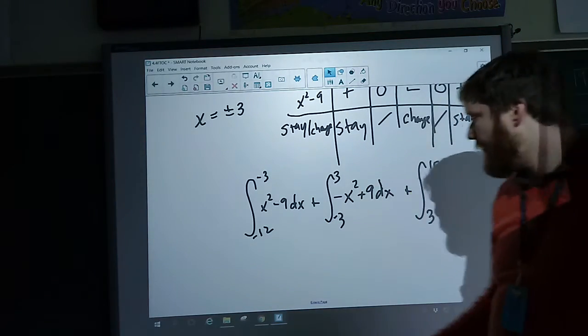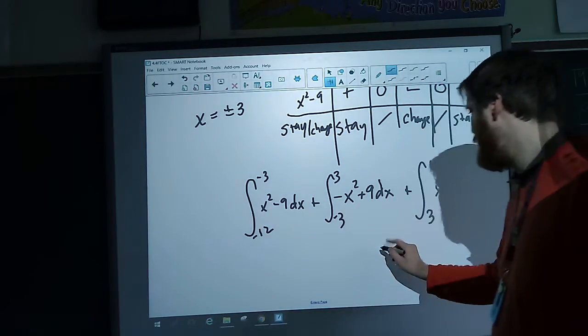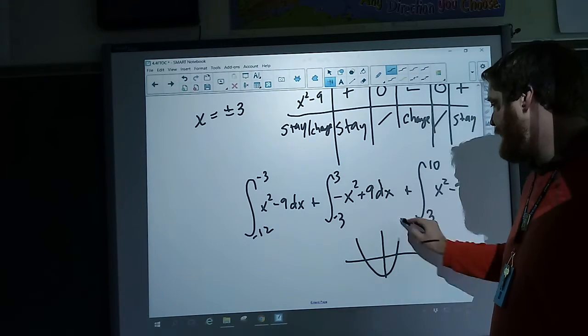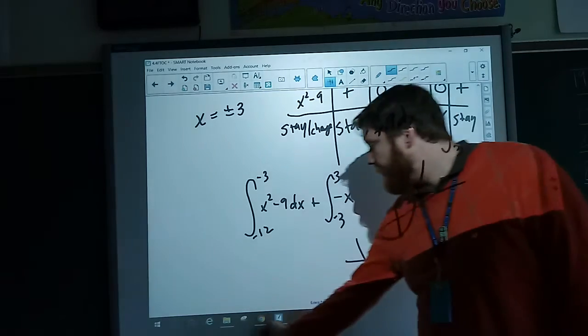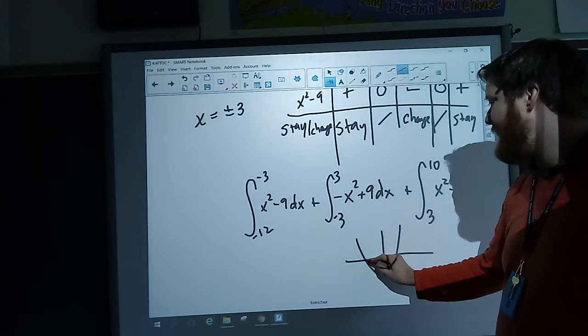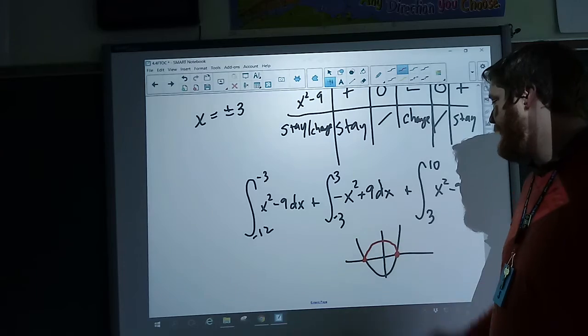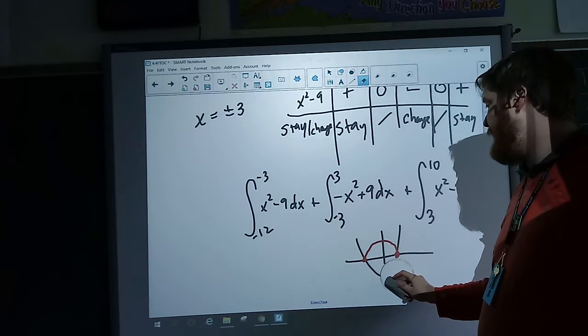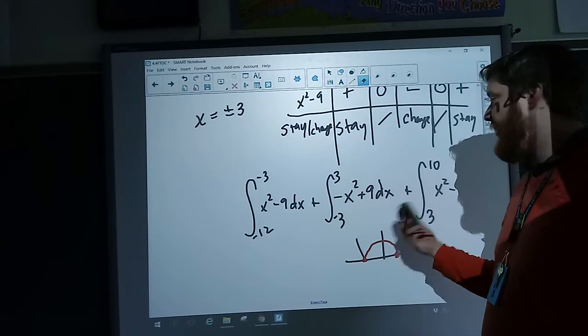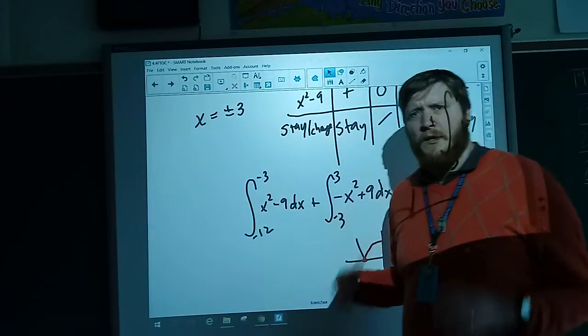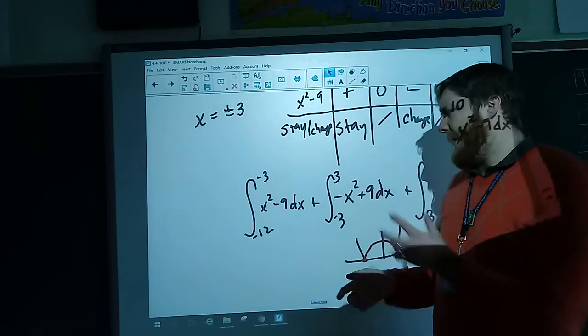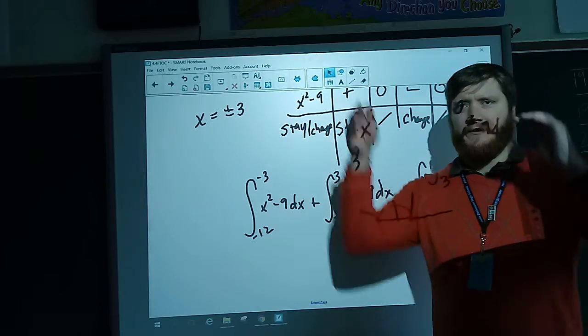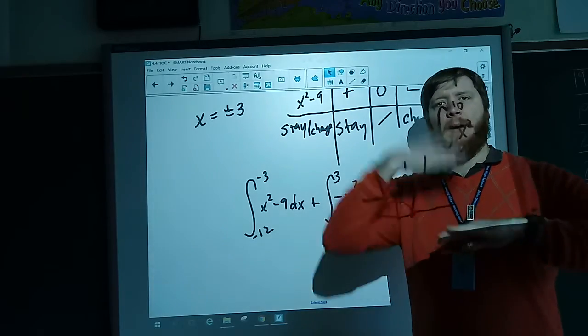The graph of this function looks something like this. Instead of being a normal parabola, what it does is it takes the absolute value. So between negative three and three, it actually bumps up like that. And you can graph this - I actually recommend you graphing this and looking at that. Graph the regular parabola x squared minus nine, and then go to Desmos and graph the absolute value of it. You'll notice that the dip underneath the x-axis just bumps up.